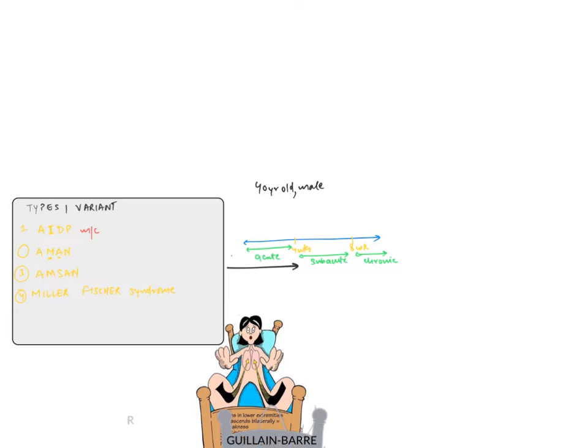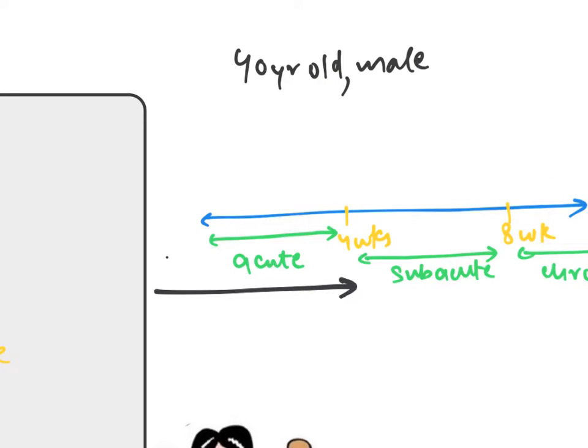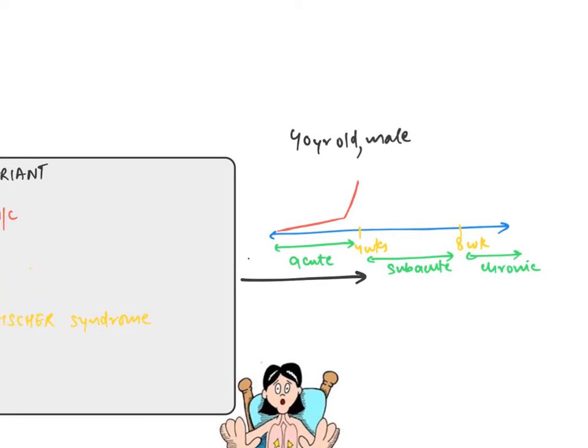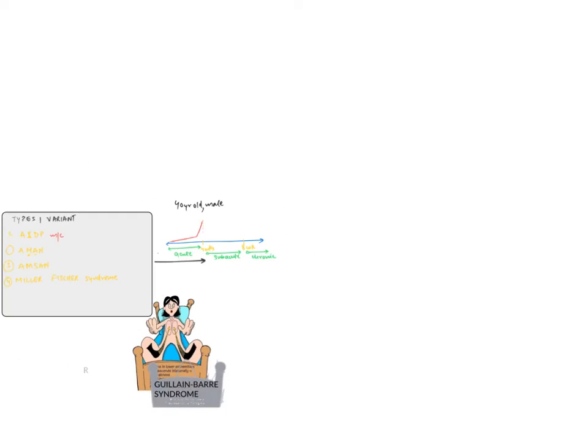The next point is that this acute onset disease, typical AIDP, presents with symptoms that rise gradually, and then within one to two days, we see a major impact. This is the most common graph pattern for the disease progression.